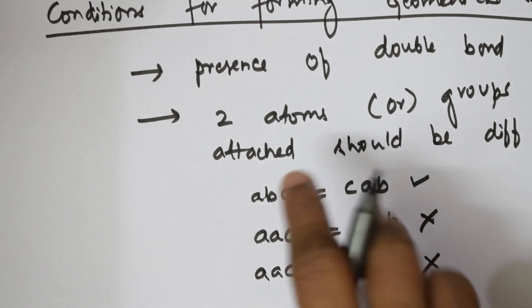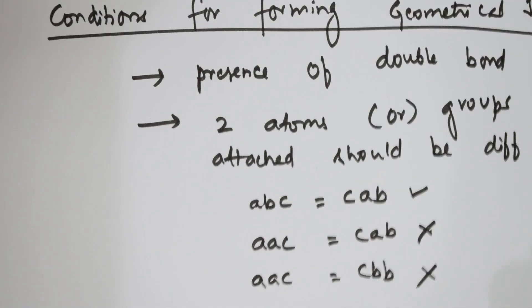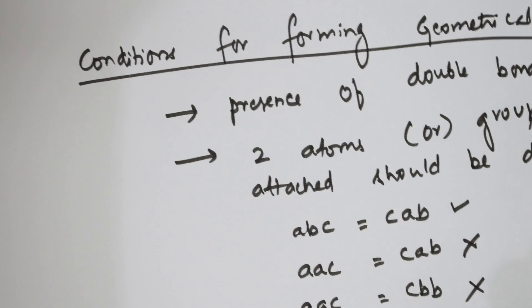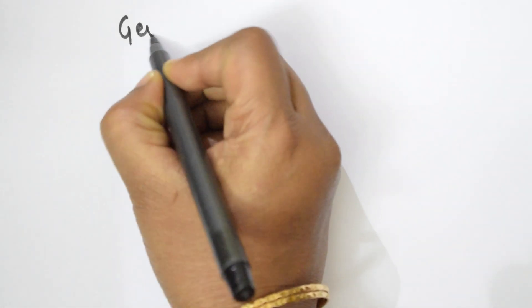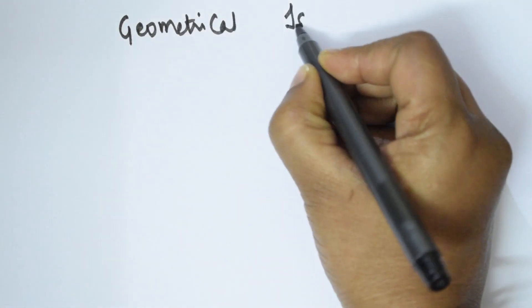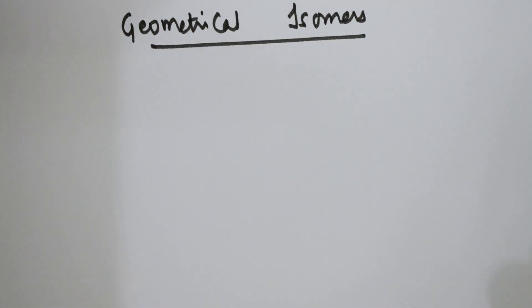So the first condition is you should have a double bond, and the second condition is the two atoms or groups attached should be different. Now let us see what are the properties of geometrical isomers — how are they different from each other?